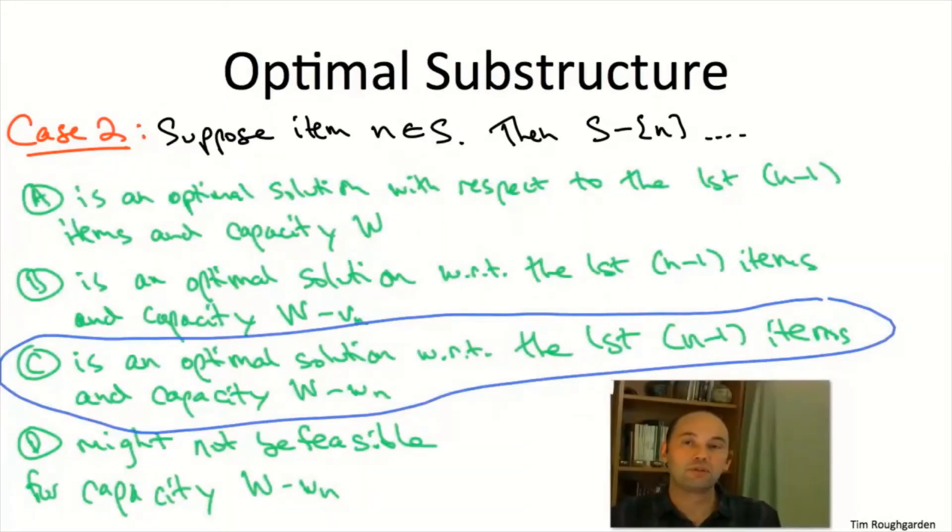A much more subtle point is part A, that's a very natural one to guess, but it turns out to not be correct. There might be smarter ways of using the first n-1 items than S minus item n if you had a full knapsack capacity of W to work with. That's a subtler point, and it's a good exercise for you to convince yourself that A is wrong. There's no reason that when you take out item n from S and still keep using the original knapsack capacity, that this has to be optimal.